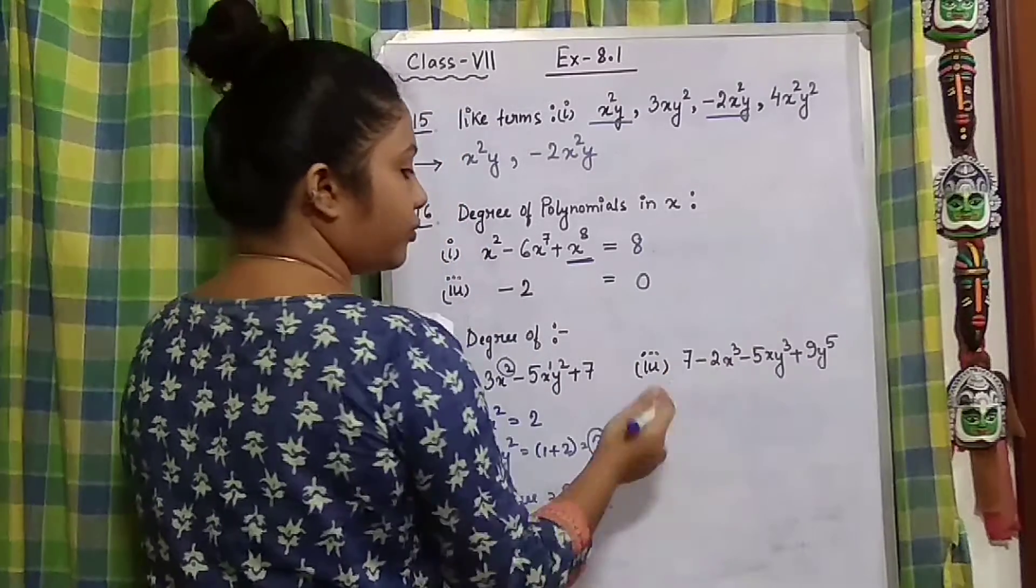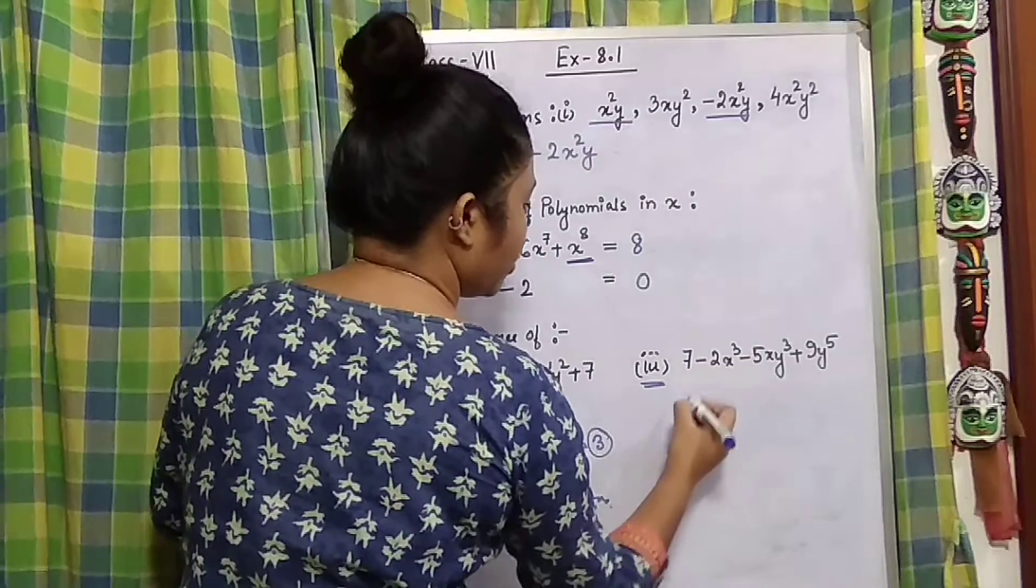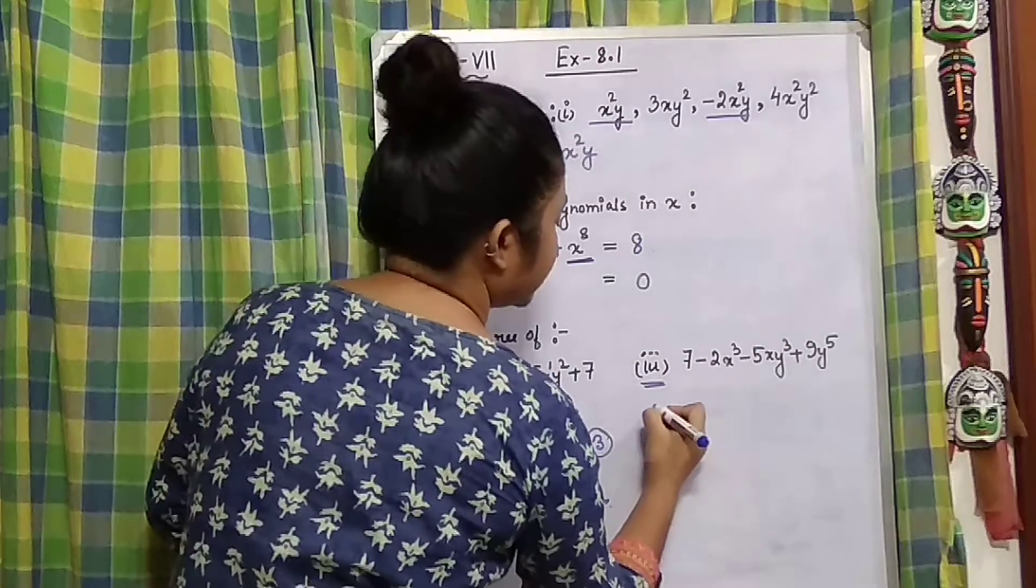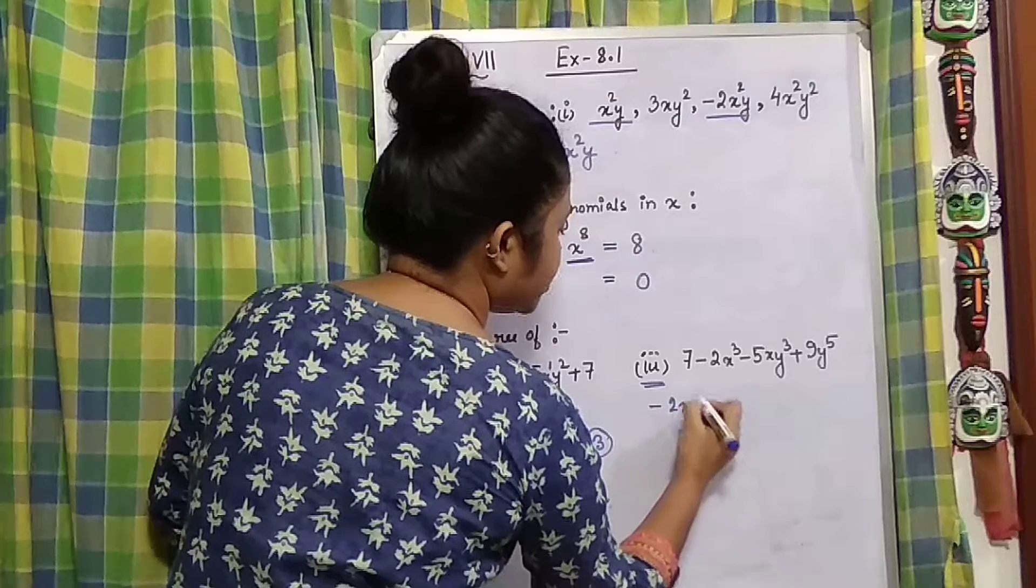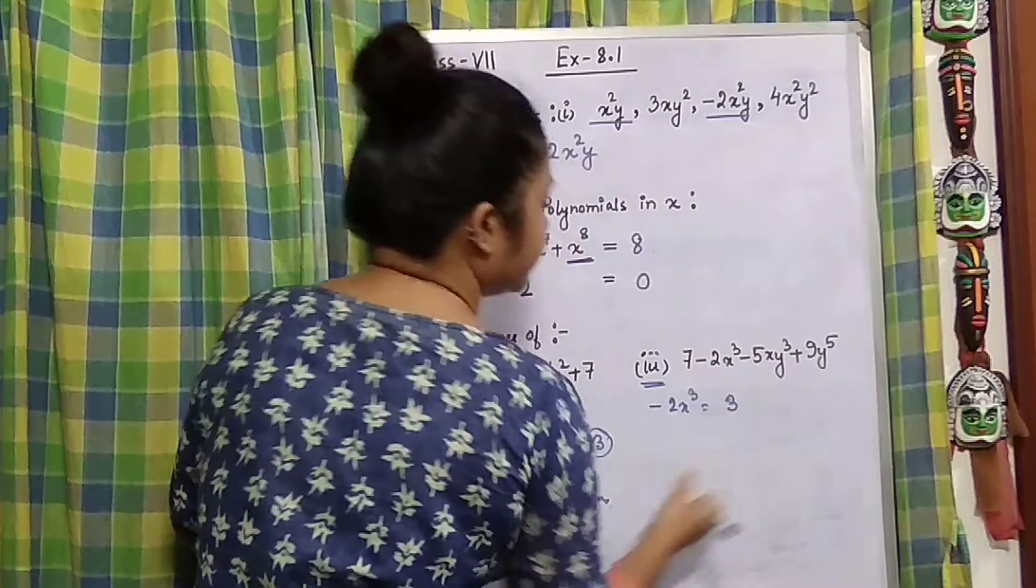Now let's do another one, number 3. Here, once again, we are going to consider each of the terms first. 2x³ - in this, the degree is 3.